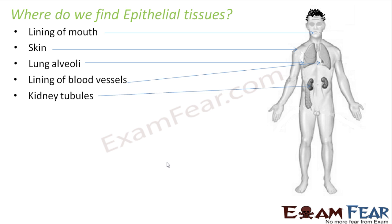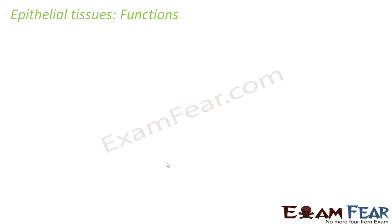So we are learning things one by one. First we saw what epithelial tissue basically is, then we saw its structure, and then where it is found. Now we will talk about the functions of epithelial tissue. Understanding the functions will tell us why epithelial tissues are found in those specific places inside the human body and not everywhere.